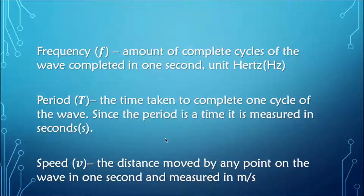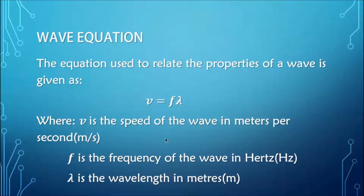Speed is the distance moved by any point on the wave in one second, and is measured in meters per second. The wave equation is used to relate the properties of a wave and is given as v = fλ, where v is the speed of the wave in meters per second, λ is the wavelength, and f is the frequency in hertz.